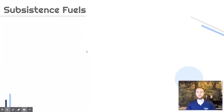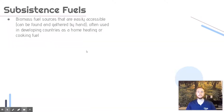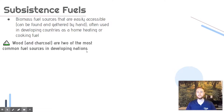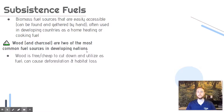The first category of fuels we'll talk about are subsistence fuels. This should look familiar from video 6.2, but as a recap, these are biomass fuels that are easily available — they can be found and gathered — and they're oftentimes used as fuel for heating a home or for cooking. Wood and charcoal are probably the two most common subsistence fuels globally. They're easily accessible; you can find wood in a forest, cut it down. It's often free or very cheap to purchase.